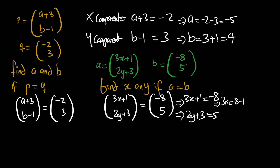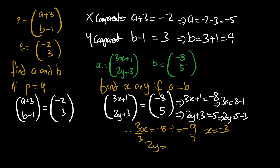From 3x + 1 = negative 8: 3x = negative 9, divide by 3, so x = negative 3. From 2y + 3 = 5: 2y = 2, divide by 2, so y = 1. Now we'll look at addition and subtraction of vectors.